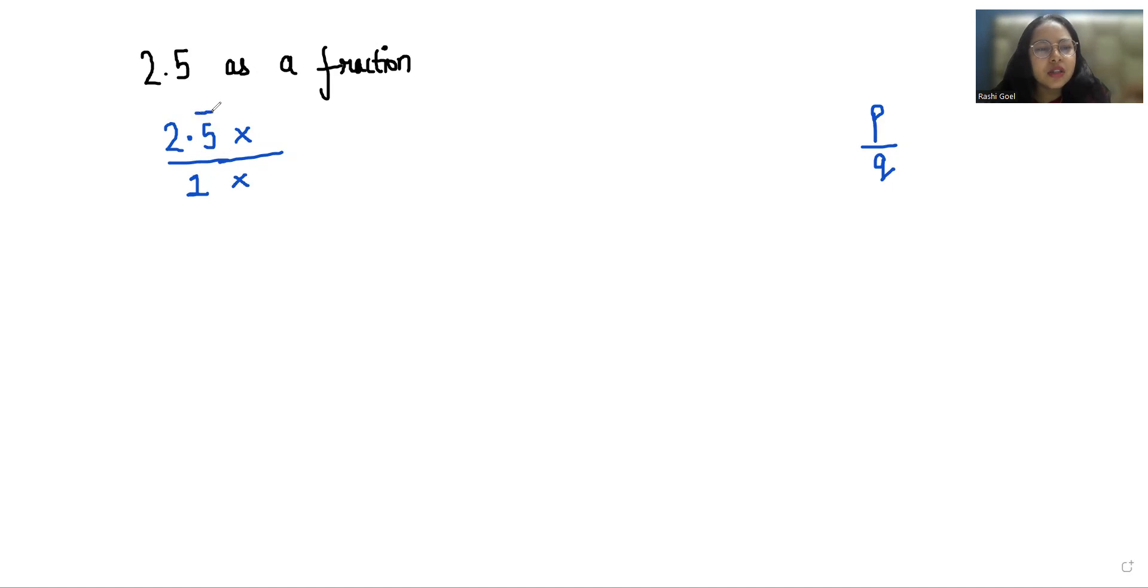Depending upon the digits after the decimal, so there is one digit after the decimal, so we multiply only one time in numerator and denominator with 10. So our numerator becomes 25 and our denominator becomes 10. So this is a fraction form.